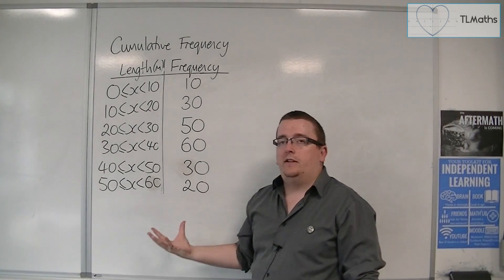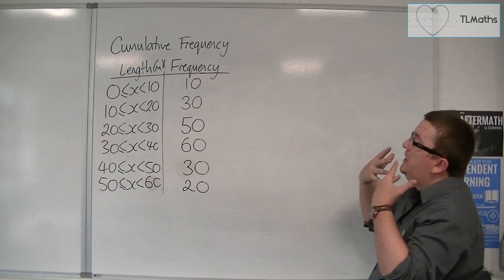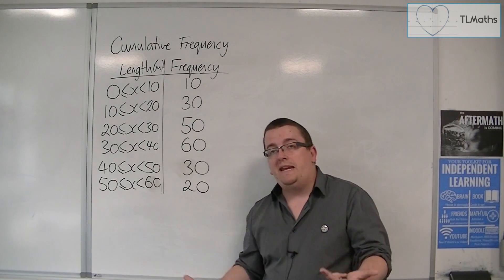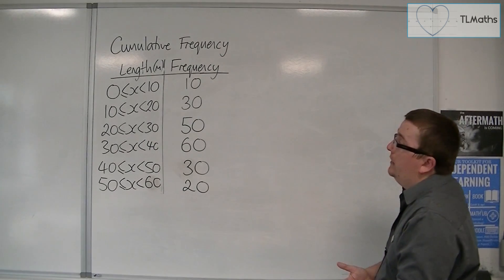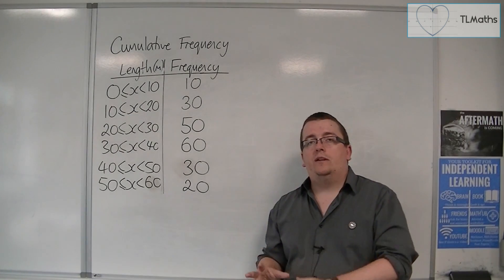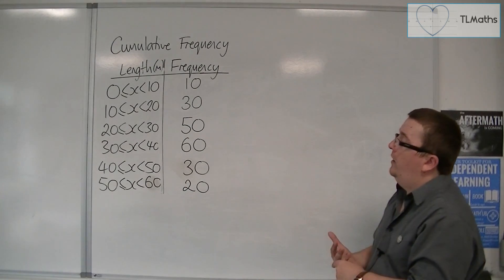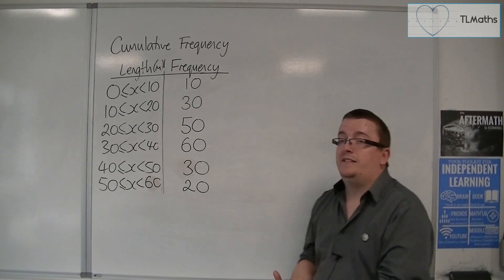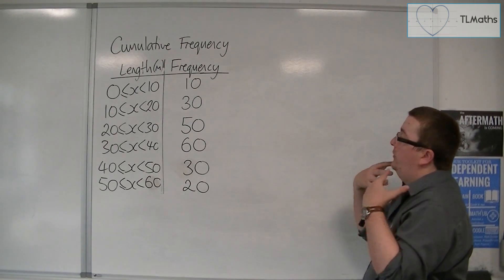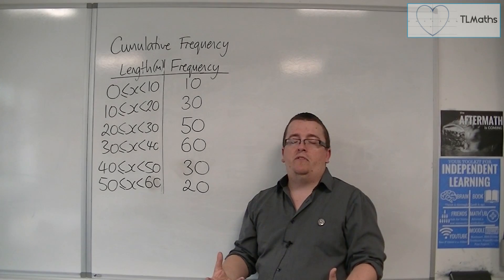Now from this data, you might want to find things like the lower quartile, the upper quartile, the interquartile range, the median, those kind of things. And in order to do that, we first of all need to calculate the cumulative frequency. Now you could have done all of those things with the raw data, but the raw data's gone. We have taken the raw data, we've put it into groups and we've actually lost that bit of information.